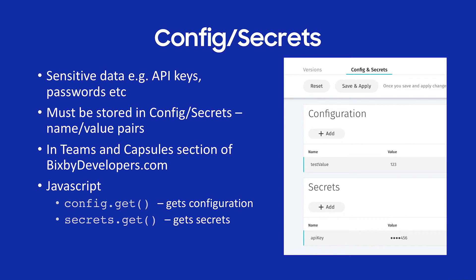So where do you store sensitive data? In config and secrets. API keys, passwords, anything sensitive that you don't want in your source code goes here. This is on BixbyDevelopers.com in the teams and capsules section — you open your submitted capsule and can set up config and secrets as name-value pairs. In your JavaScript, config.get retrieves configuration data just like capsule.properties, and secrets.get retrieves secrets data. This is the place to store sensitive data you don't want in your source code.